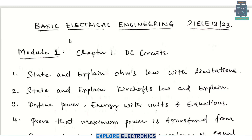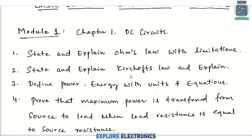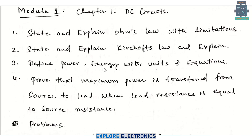Starting with module 1, chapter 1 is DC circuits. Here you can easily expect theory questions like Ohm's law and Kirchhoff's laws — out of these two, one question will be there from the theory part. KCL and KVL: you need to state the laws and explain with respect to the expressions by taking any example. Similarly, you need to explain Ohm's law, and Ohm's law limitations is also important — they may ask to explain Ohm's law with its limitations.